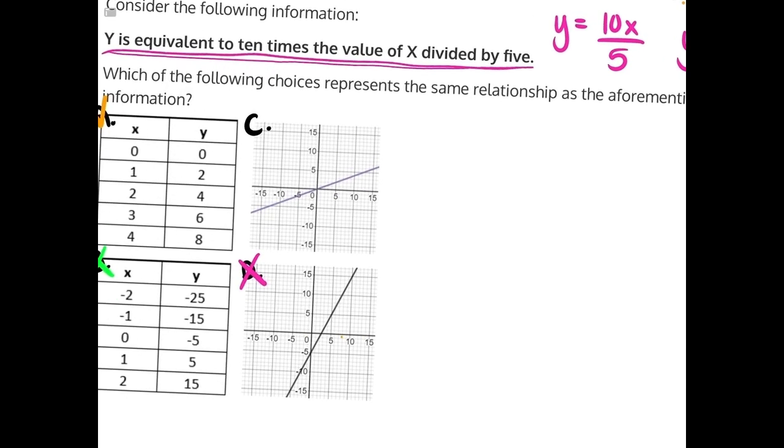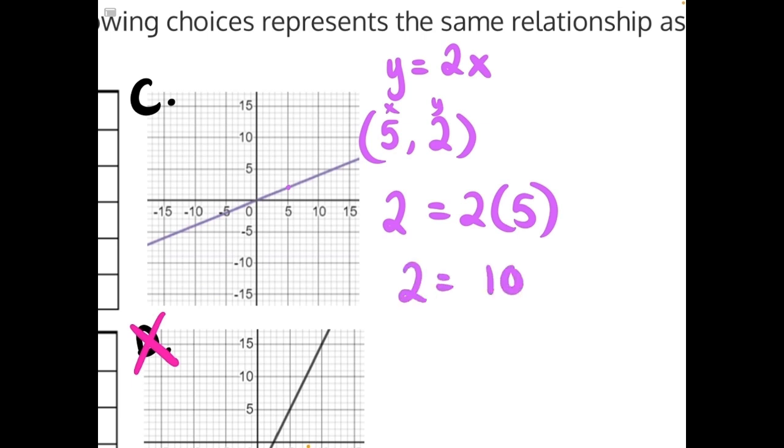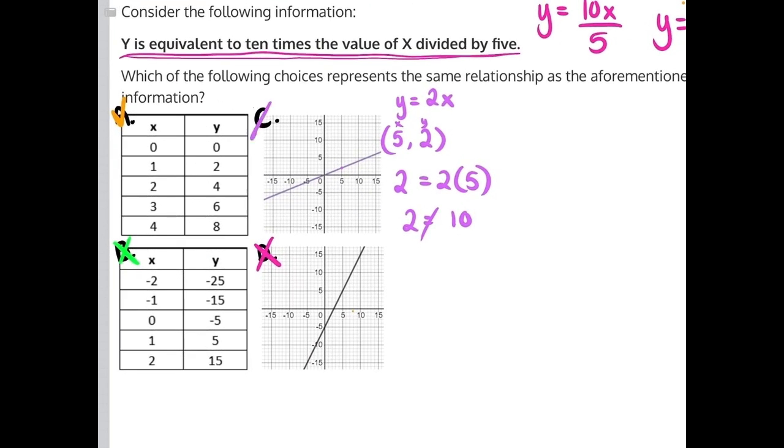For answer choice C, let's zoom in a little bit. Let's find a point on this graph that we could use to test with our equation. Again, our equation is y is equal to 2x. So let's find a point. I like this point right here. We have to the right 5 and up 2, which would give us the coordinate point of x is 5 and y is 2, 5 comma 2. And so now we can plug in these values of x and y and see if we get a true statement. So we'll have 2 as our y is equal to 2 times 5, which is our x. 2 is not equal to 10, which is 2 times 5. So that means answer choice C is incorrect and answer choice A is our correct answer.